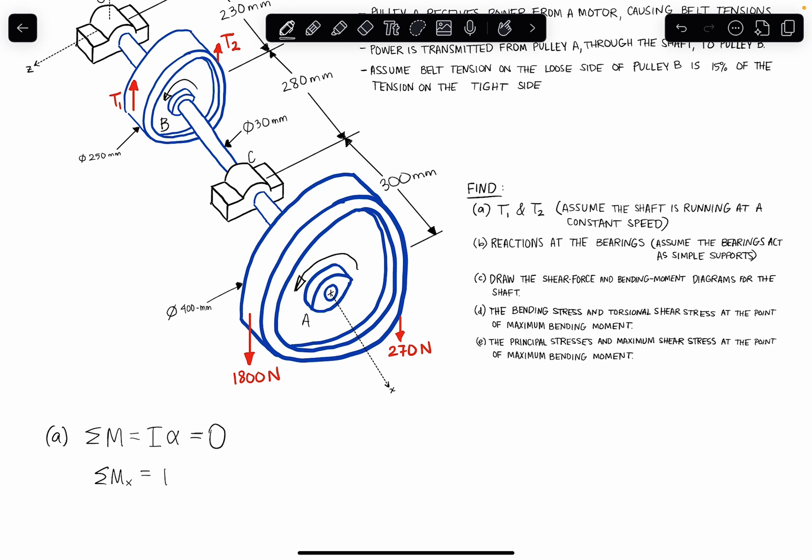So if I sum the moments about the x-axis, I have the higher tension side of pulley A, that is 1800 newtons, and using my right-hand rule, I can see that that is going to be acting in a positive direction along the positive x-axis, and we're also given that the diameter of pulley A is 400 millimeters, so the distance that the 1800 newtons is acting from the x-axis is going to be half of that. It's going to be 200 millimeters.